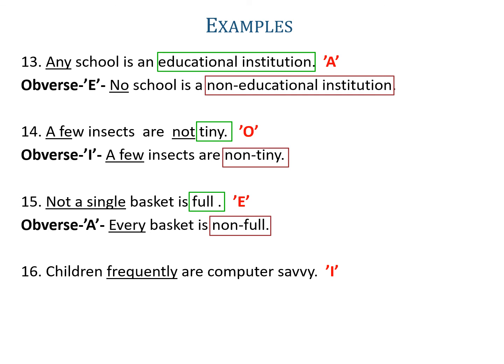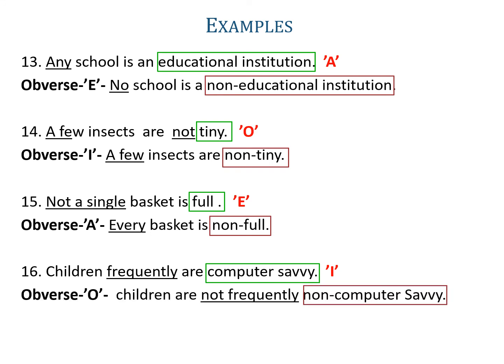Example sixteen: 'Children frequently are computer savvy.' The word frequently is used, so it is an I-proposition. The obverse of I is O, where not frequently will be used. The predicate is computer savvy, its complementary will be non-computer savvy. So the obverse will be written as 'children are not frequently non-computer savvy'. Note that you can do it directly or reduce the given proposition into the basic symbolic form and then write its obverse — both are correct.